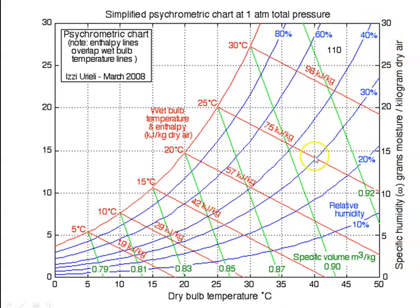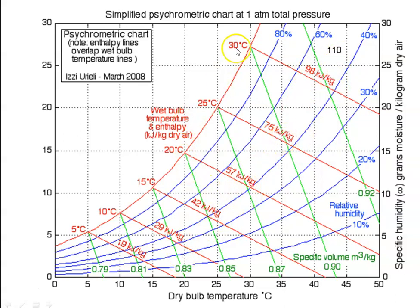The blue color lines are the relative humidity lines: 10 percent, 20 percent, 30 percent, 40 percent, 60 percent, 80 percent. The red line is 100 percent relative humidity — that is the saturation line. The red lines are also the lines for wet bulb temperature as well as the enthalpy of the air. Enthalpy is given here — 98 kilojoules per kilogram, 75 kilojoules per kilogram. The wet bulb temperature is marked on the other side. The green color lines are the specific volume. These are all the various parameters available in the psychrometric chart.